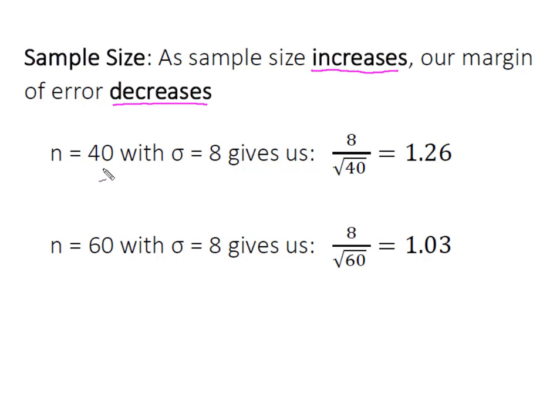So we'll look at the same example. So I have an N of 40. I take a sample of 60 with that same population standard deviation of 8, gives me a standard error of 1.26. But what if I want less error in my estimation?